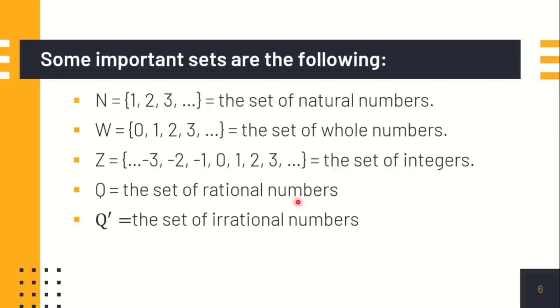And then the Q prime. Q prime is the set of irrational numbers. For example, the non-terminating or the non-repeating decimals. For example, the patterns that you can see in decimals, like 0.2323 and so on.